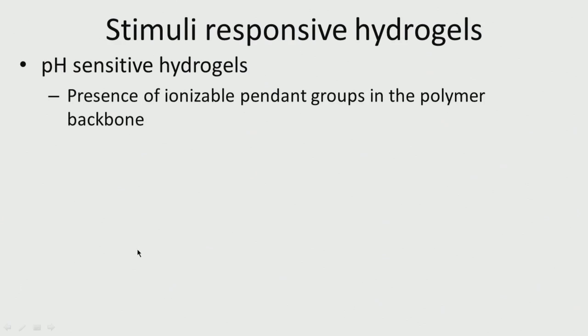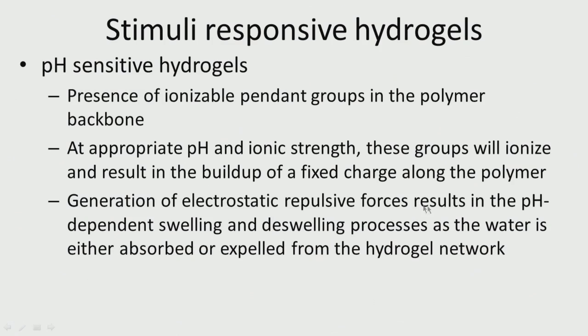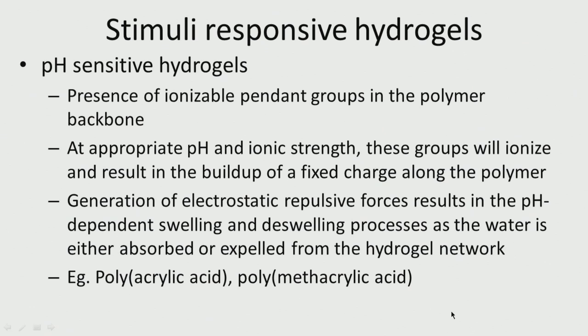pH-sensitive gels have ionizable pendant groups in the polymer backbone. At certain pH values these groups ionize, and at appropriate pH and ionic strength they build up a fixed charge along the polymer. The electrostatic repulsive forces result in pH-dependent swelling and de-swelling as water is either absorbed or expelled from the hydrogel network. For example, at tumor sites the pH is acidic, and the hydrogel may release encapsulated drugs or chemicals under those conditions. Polyacrylic acid and polymethacrylic acid are examples of pH-sensitive hydrogels.